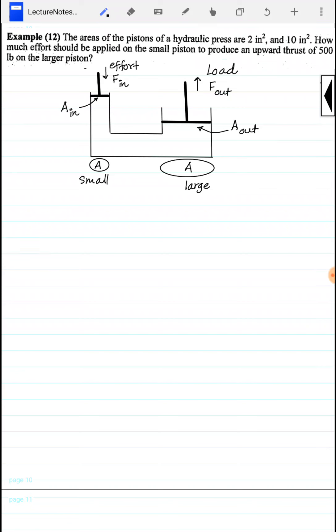December 12th. Example 12: The areas of the pistons of a hydraulic press are 2 square inches and 10 square inches. How much effort should be applied on the small piston to produce an upward thrust on the larger piston?